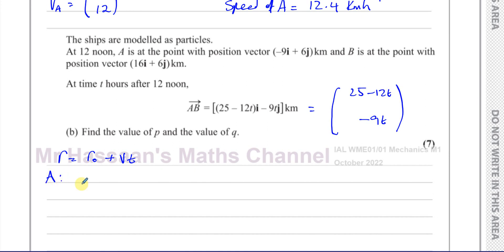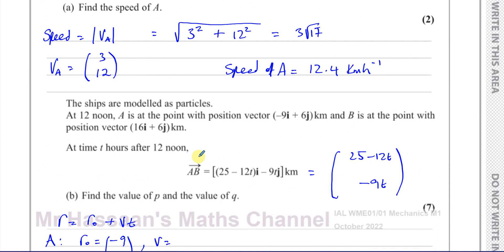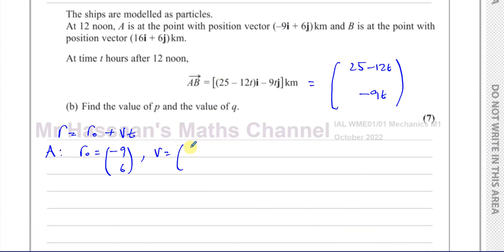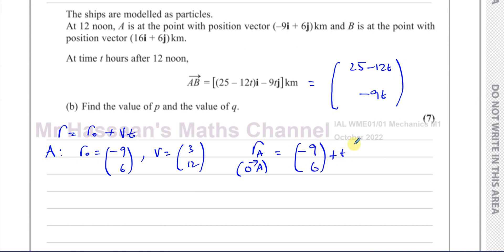Let's look at A. We have R₀ equal to its initial position, which is (−9, 6), that's −9i + 6j. Its velocity vector is (3, 12). So the position vector of A, which is the vector from O to A, equals (−9, 6) plus t times (3, 12), which we can write as one vector: (−9 + 3t, 6 + 12t).